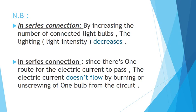Since there is only one route for the electric current to pass in series connection, if one bulb is burned or unscrewed from the circuit, this makes it an open circuit. An open circuit means no electricity will flow through the circuit at all. So in series connection, if only one lamp is burned, unscrewed, removed, or broken, the electric current doesn't flow through the circuit. Please study this part carefully.